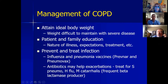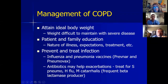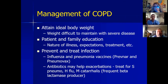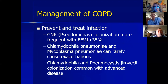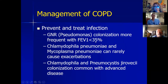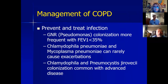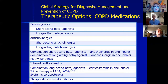General management includes attaining ideal body weight, patient and family education, and infection prevention — both influenza and pneumonia vaccines are important. Antibiotics should be used for exacerbations, targeting Streptococcus pneumoniae, H. flu, and Moraxella catarrhalis — a frequent beta-lactamase producer, which is why amoxicillin no longer works as well. For more severe airflow limitation — FEV1 less than 35% — gram negatives like Pseudomonas become more common, so antibiotic coverage needs to be broadened accordingly.